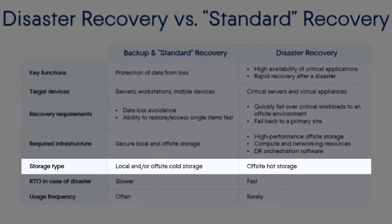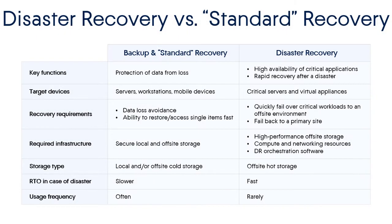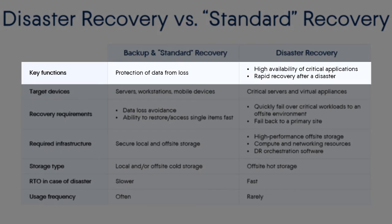From the viewpoint of technology, standard recovery is based on cold storage, whereas disaster recovery uses hot storage. Cold storage is information that you don't need to access very often — it represents inactive data that doesn't need to be accessed for months or even years. In turn, hot storage is data you need to access right away. The goal of standard recovery is to protect corporate data from loss, whereas the key function of disaster recovery is to perform a fast recovery after a disaster and ensure a high level of availability of business-critical applications.